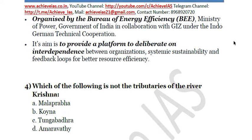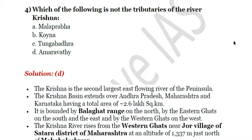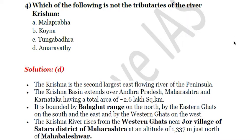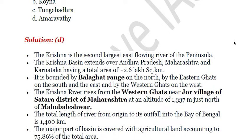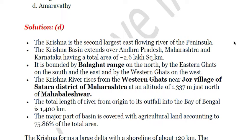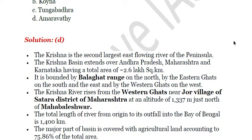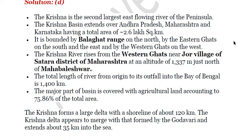The next question: which of the following is not a tributary of the river Krishna? A — Malaprabha, B — Koena, C — Tungabhadra, D — Amravati. The answer is D, Amravati. Krishna is the second largest east-flowing river of the peninsula. Its basin extends over Andhra Pradesh, Maharashtra, and Karnataka. It is bounded by the Balaghat range on the north, the Eastern Ghats on the south and east, and the Western Ghats on the west. Please note that the Balaghat range is on the northern side — this is commonly unknown.